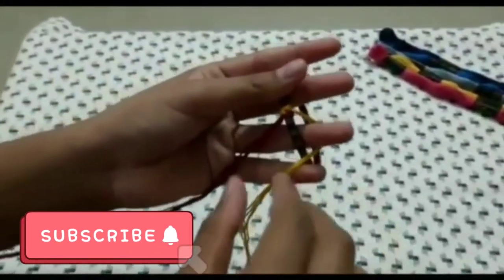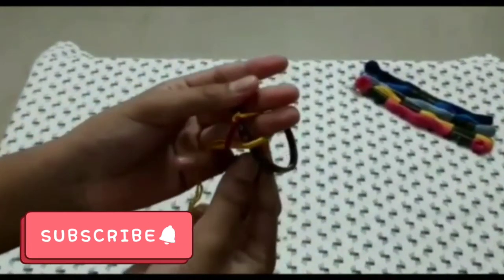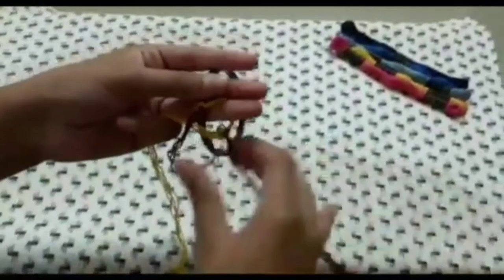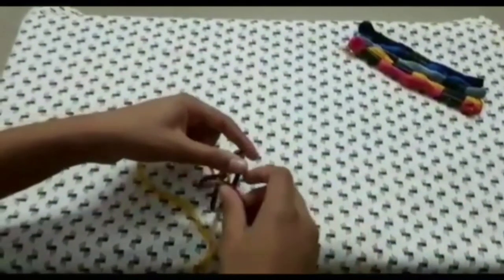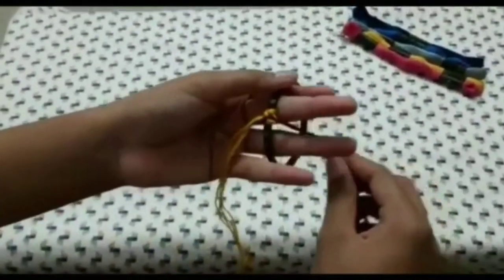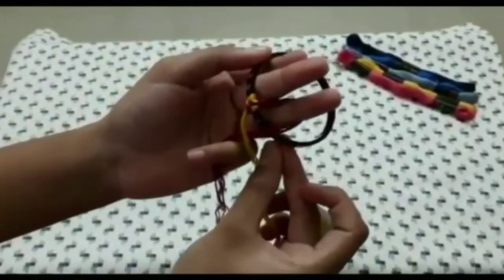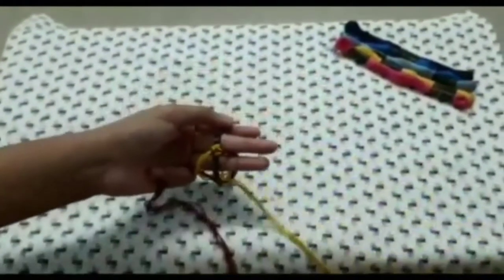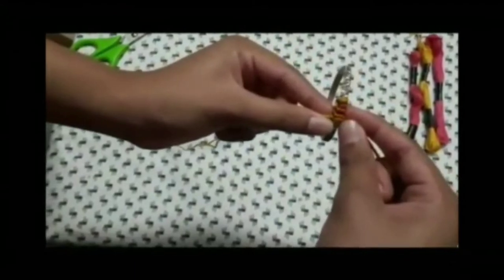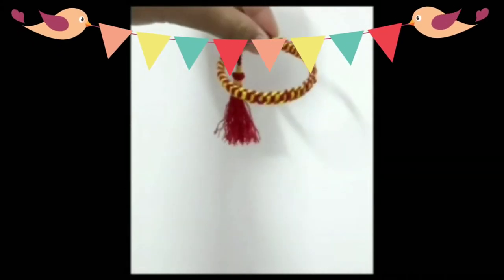Tie the knot as well. Repeat the same steps for the rest of the bangle. You can decorate your bangle by adding a lead gun to it and our embroidery thread bangle is ready.